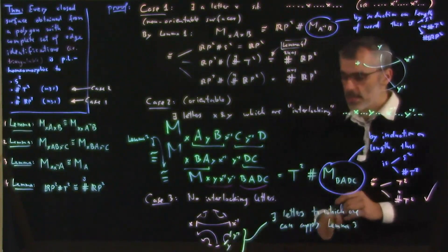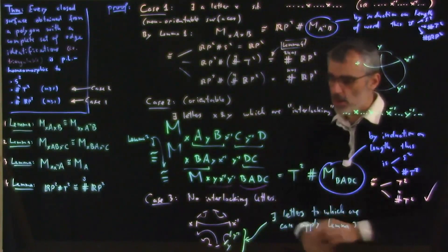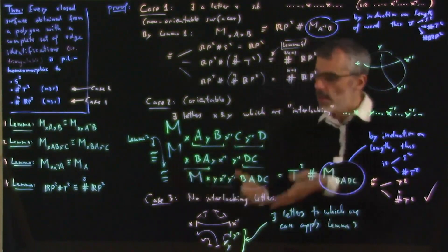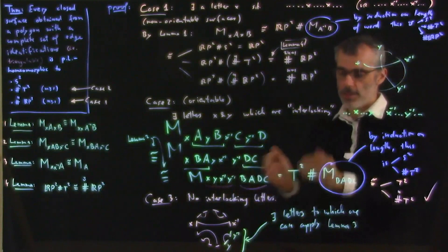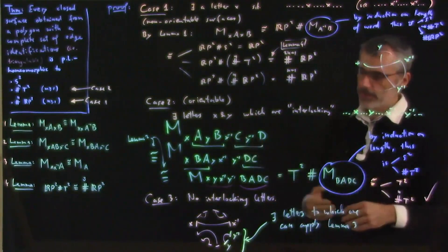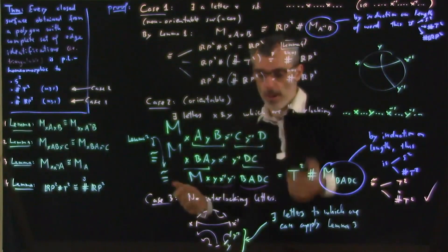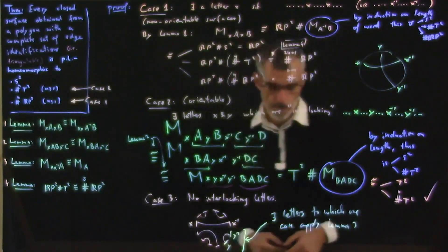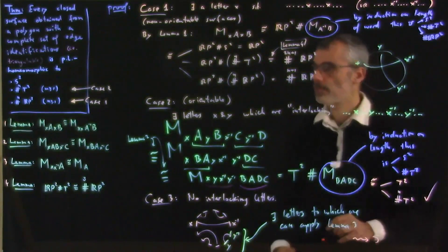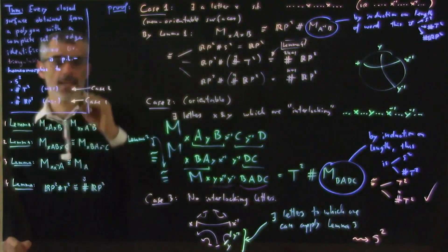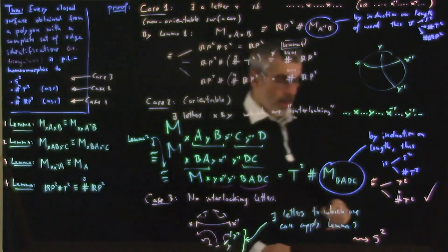And this brings us to a smaller word, which again has no interlocking letters. So you cancel, cancel, cancel, cancel, cancel, until you're left with nothing. Well, with the smallest possible word, which is just x, x inverse, if you admit bigons, or if you don't admit bigons, because you want edges to remain straight, it's going to be like x, x inverse, y, y inverse, which is S^2. And that's it.